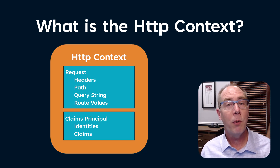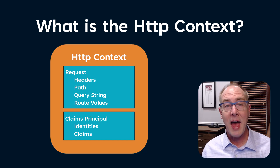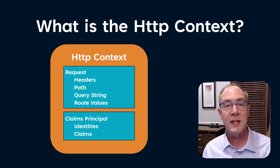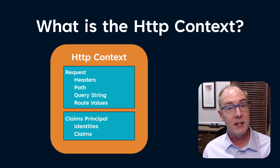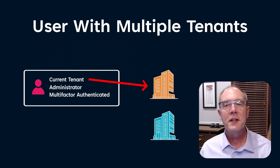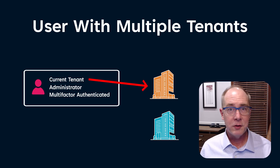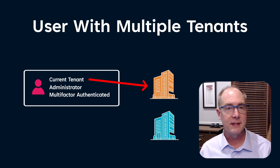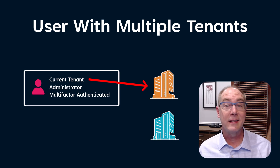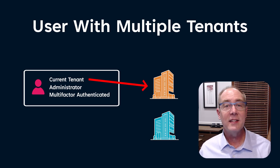What's important to us is that we can add claims to the user's identity in the HTTP request context before it gets to the authorization. In this situation, I might have a user of an application that interacts with multiple tenants, and that user might have different rights depending on the tenant. When the user's in the application, they need to select a tenant they're working on. When that request comes in, I need to see what tenant the user's interacting with and what those rights are.